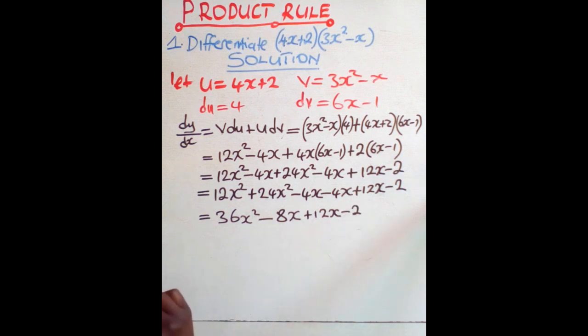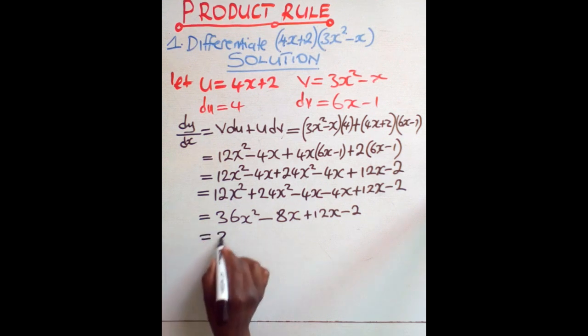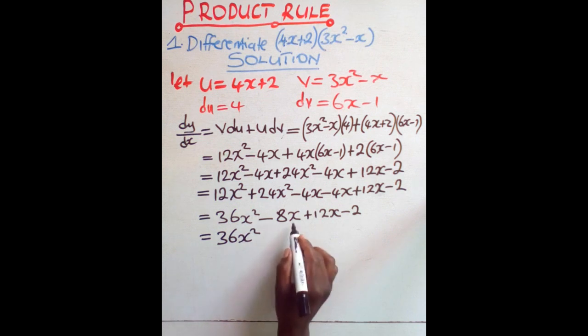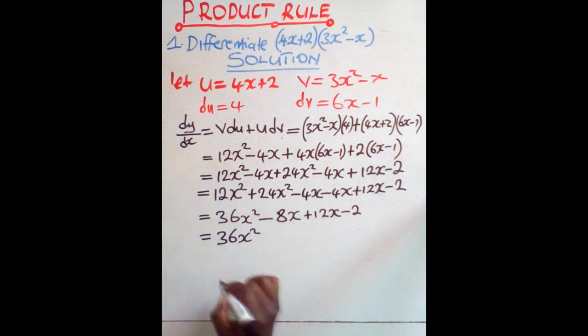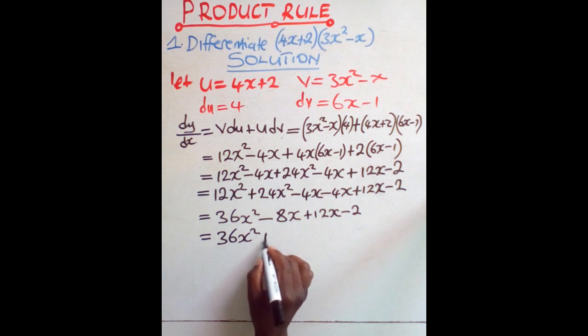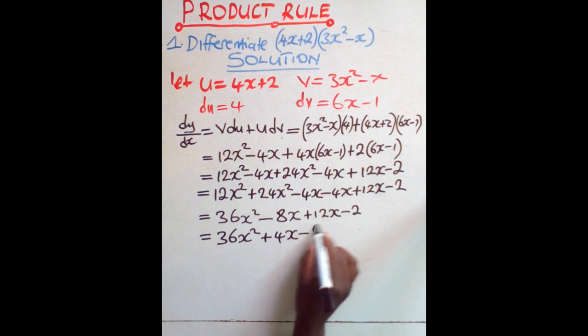So plus 12x minus 2. Then from that point, we are going to say this is equal to 36x squared, negative 8, positive 12. It's more like you are saying 12 minus 8, it will give you 4, but there is x, hence you have positive 4x minus 2.